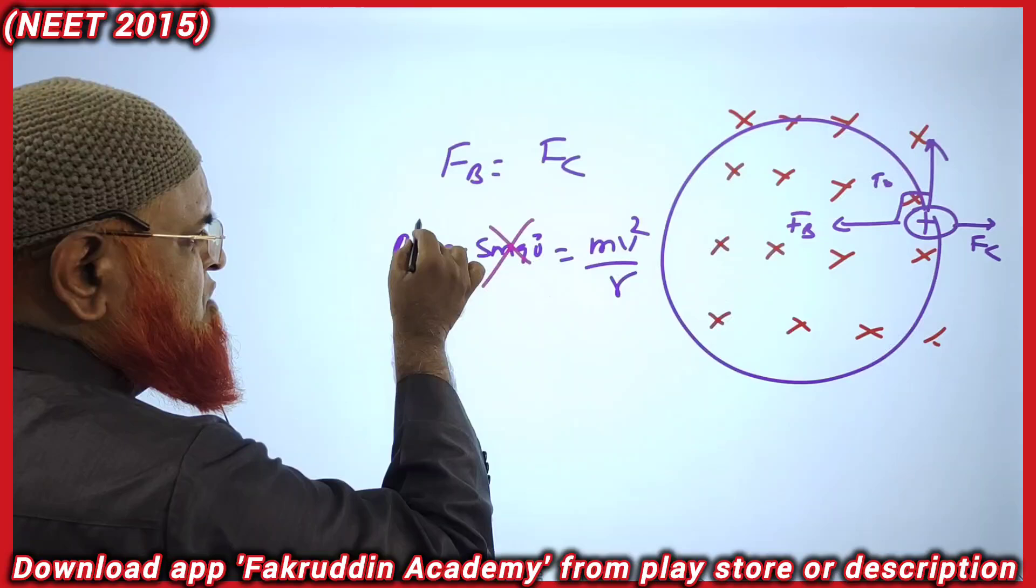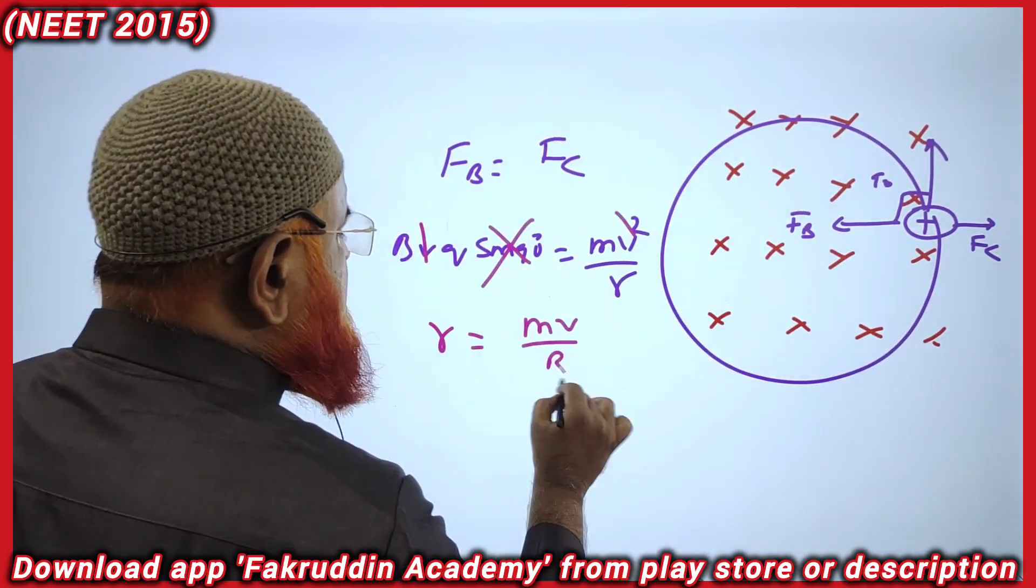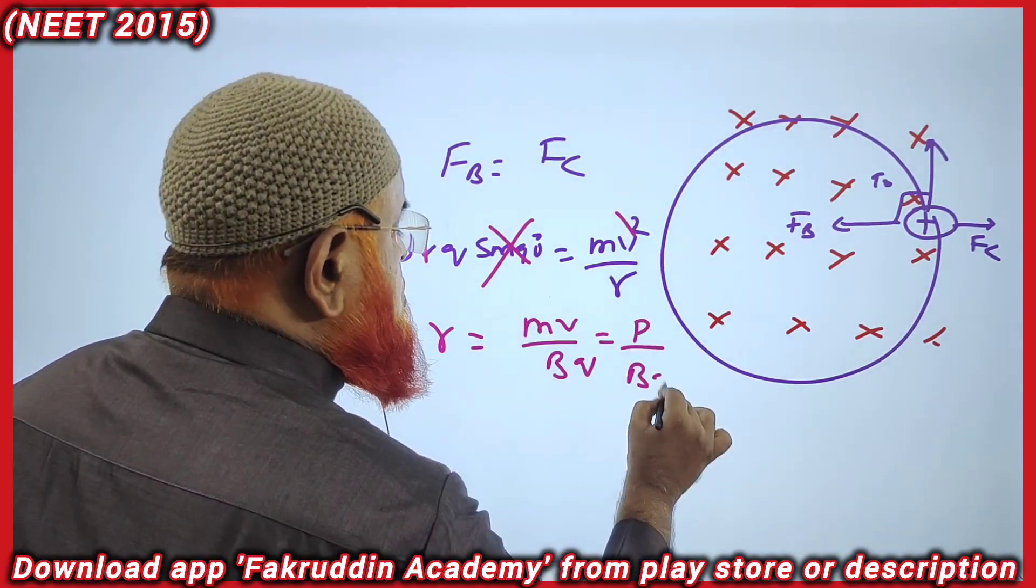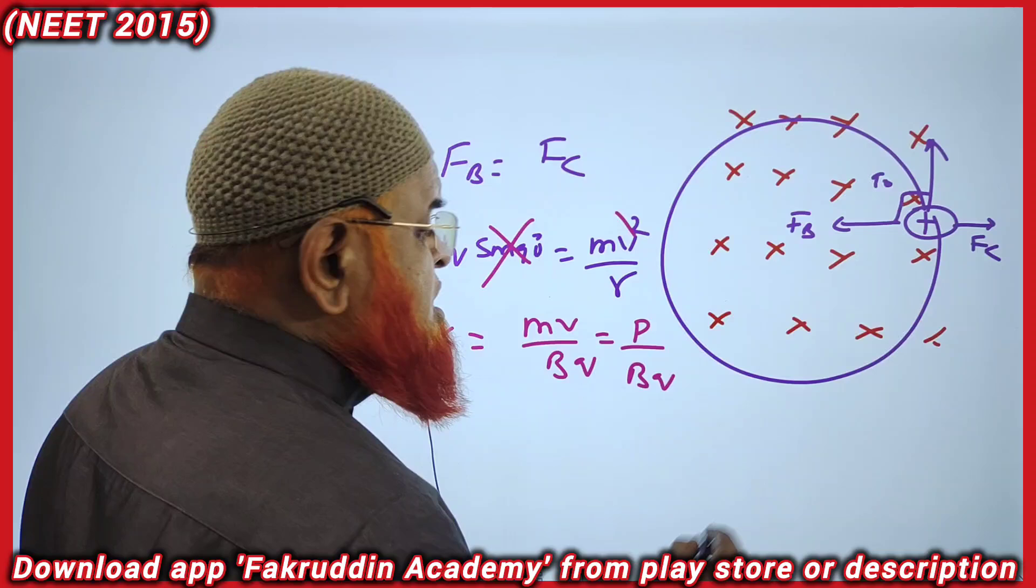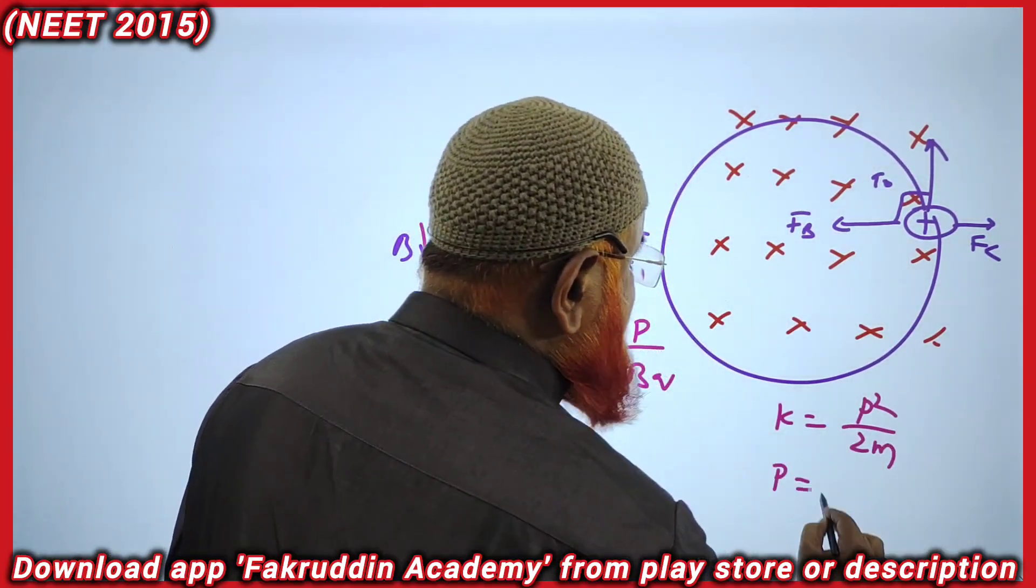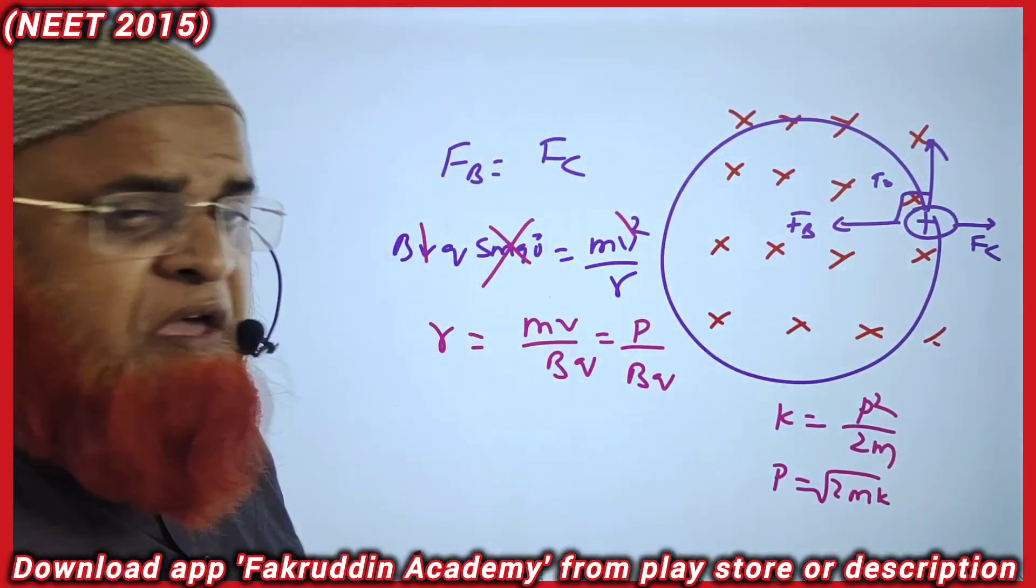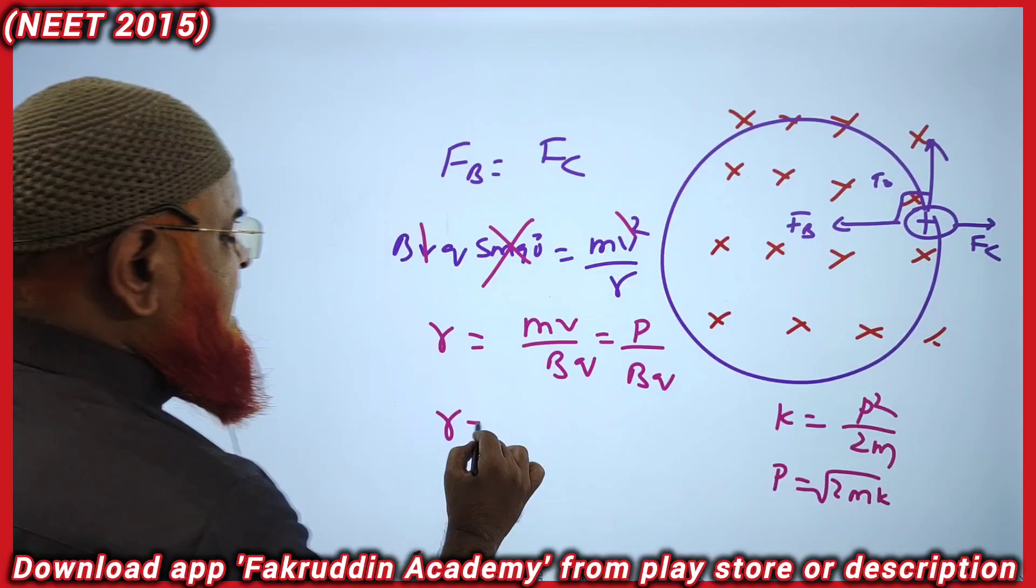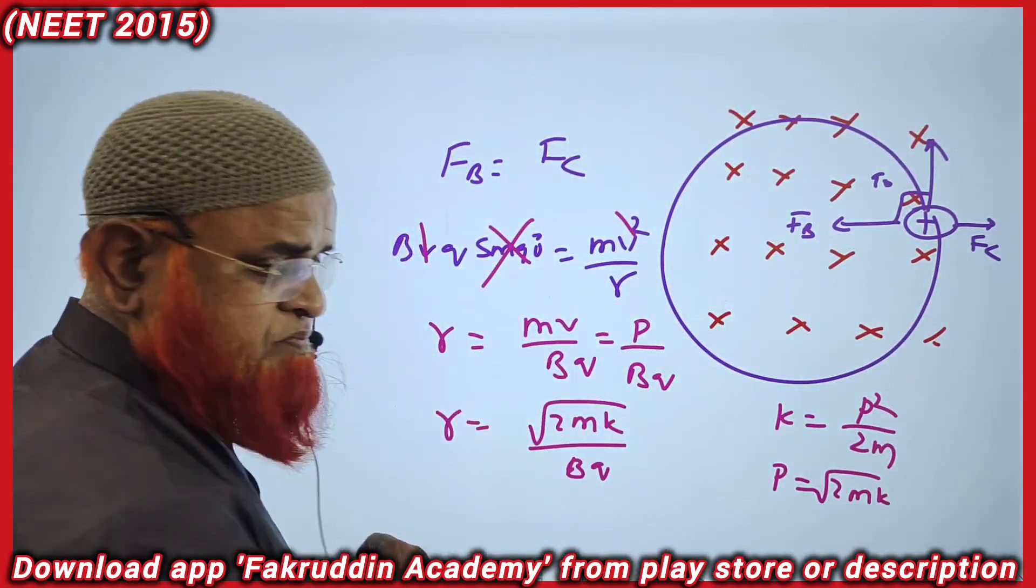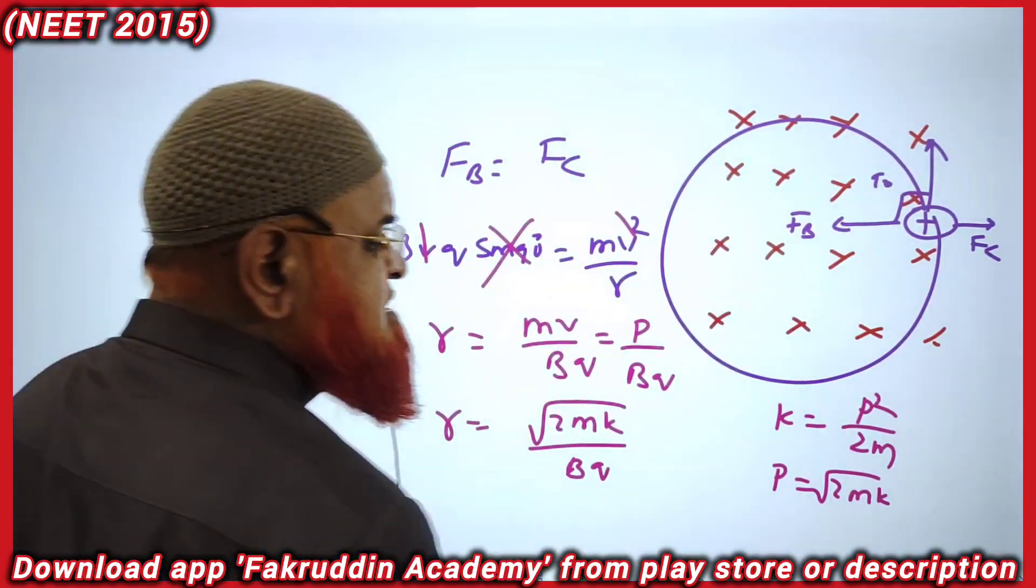So r equals mv/BQ, which is nothing but p/BQ, where p is the momentum. You know kinetic energy is p²/2m, so p is √(2mK). Substituting that p here, r equals √(2mK)/BQ. This is the form I am getting.